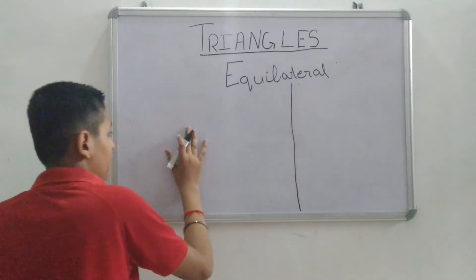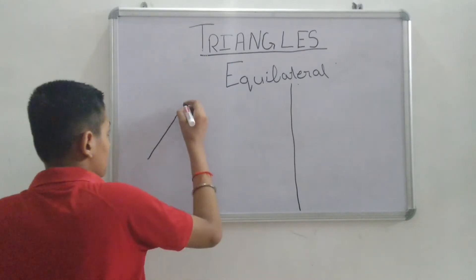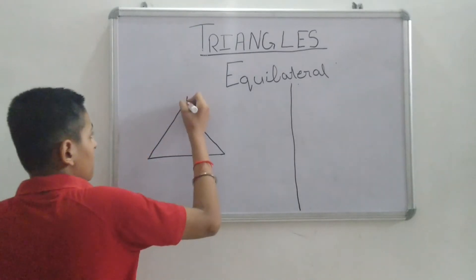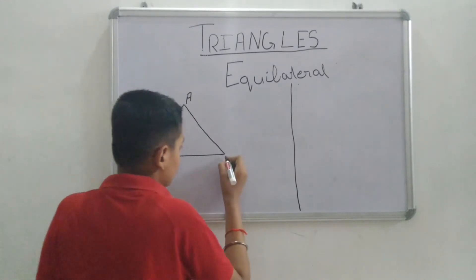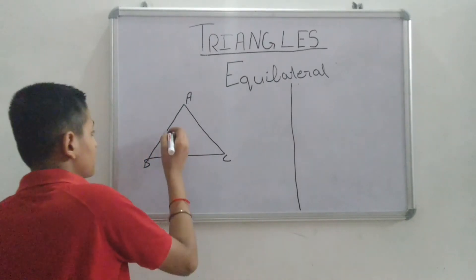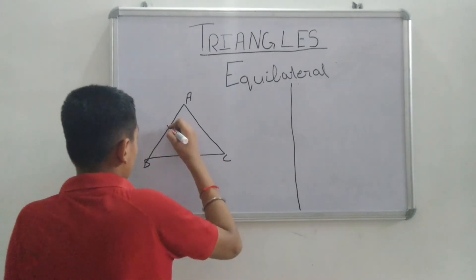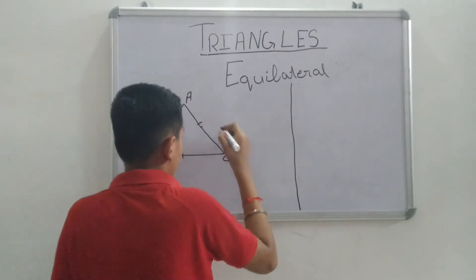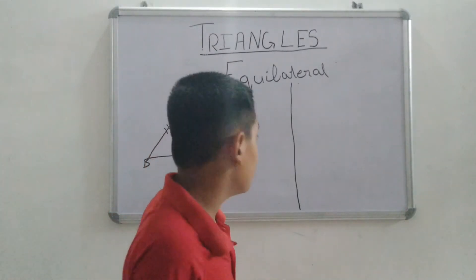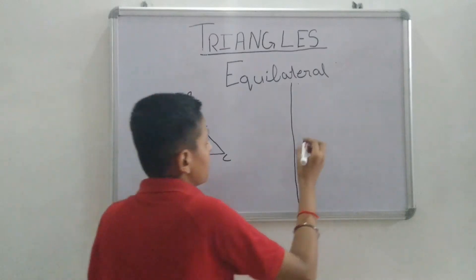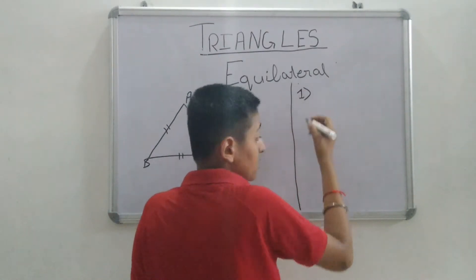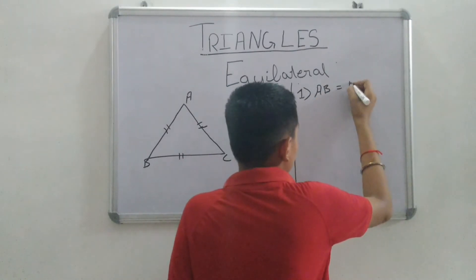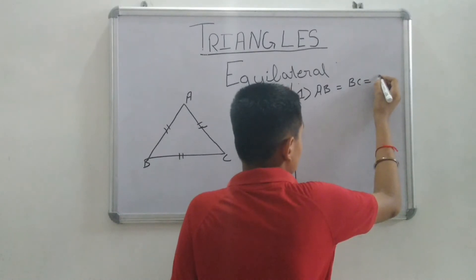Here are the properties and here is the triangle. This is our triangle with points A, B, and C. In an equilateral triangle, sides AB, BC, and CA are all equal to each other. First property: they are all equal. AB equals BC equals CA.